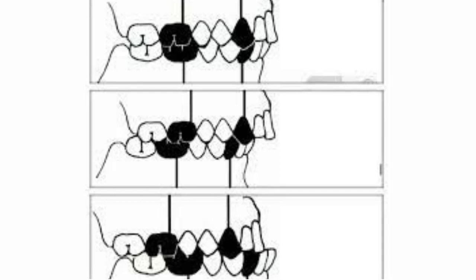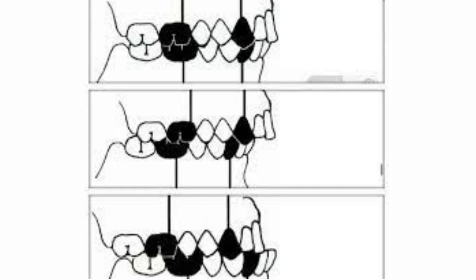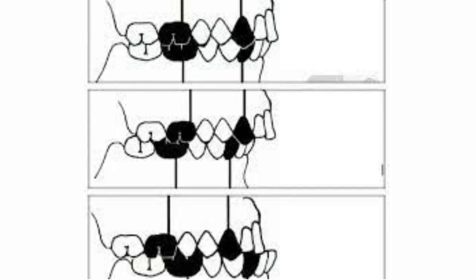And in the third picture, the last picture, you can see that the upper canine is between the lower canine and the first premolar. So between.